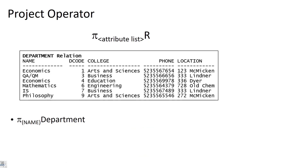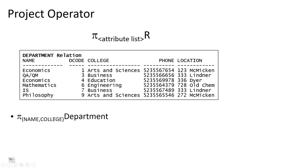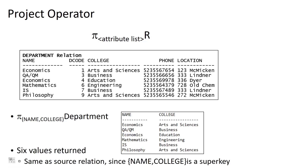With the department relation, if we project the name attribute, we get five tuples returned since name is not a super key — there are two economics departments, one in arts and sciences and one in education. However, if we project both name and college together, that combination is a super key: we can uniquely identify every tuple based on these two attributes. In that case, all six tuples are returned in the resulting relation. Those are our unary operators SELECT and PROJECT.